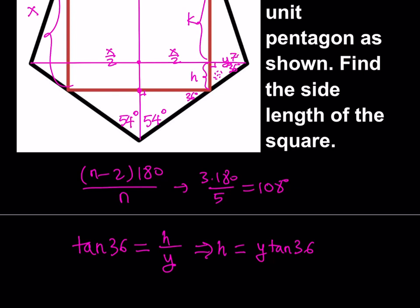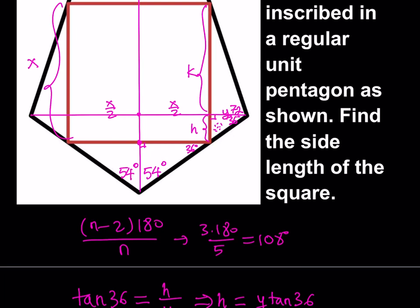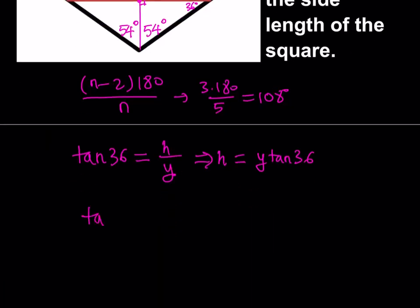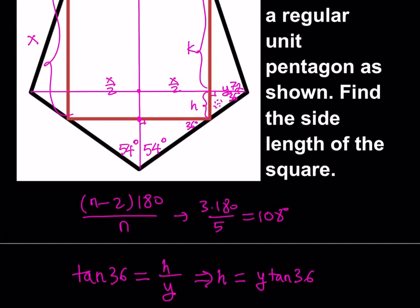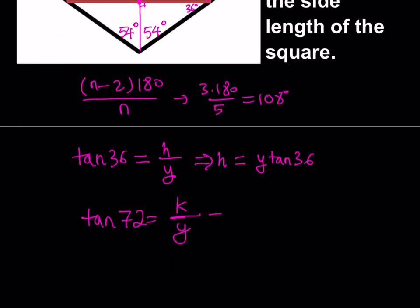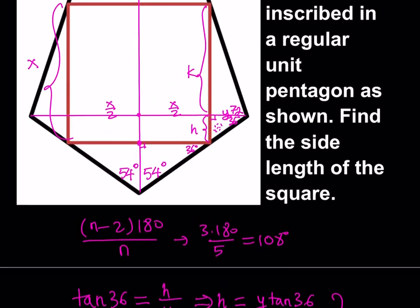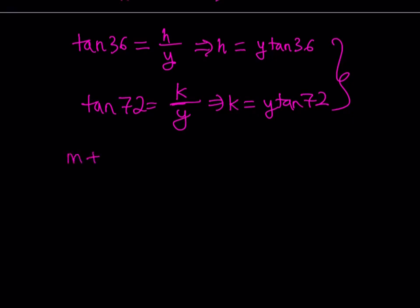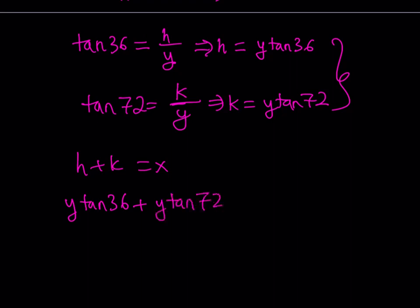How about k? If this angle is 36 degrees, the other must be 72 degrees because they add up to 108. So k can be written using tangent again — this time tangent 72. Tangent 72 equals k over y, because you're looking at the opposite side k but the adjacent side doesn't change. So k is equal to y times tangent 72. It's important to express two different things in terms of the same variable. We also know that h plus k is equal to x, since those lengths make up the side length of the square. So: h equals y·tan36, k equals y·tan72, and their sum equals x.